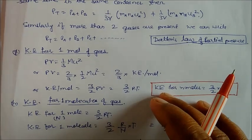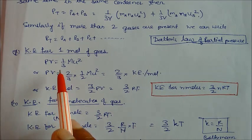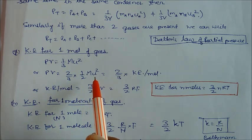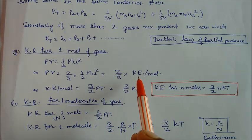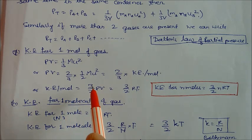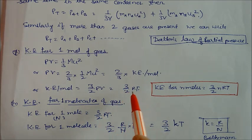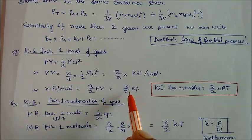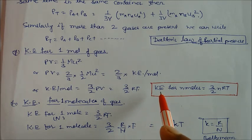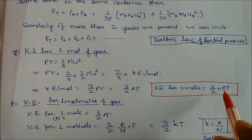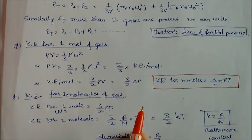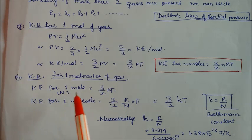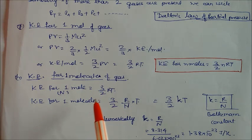For the kinetic gas equation for one mole: pV = (1/3)Mu², which can be written as pV = (2/3) × (1/2)Mu² = (2/3) × KE per mole. Therefore, kinetic energy per mole = (3/2)pV = (3/2)RT. For n moles, the total kinetic energy = (3/2)nRT.